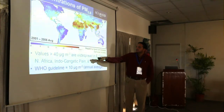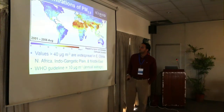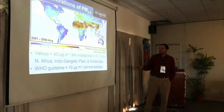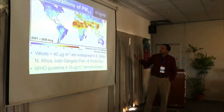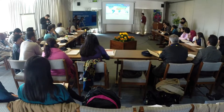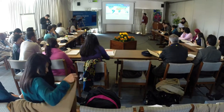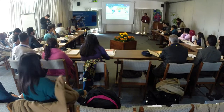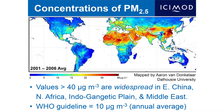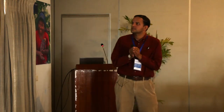Looking at the color shading on the map — focusing on the yellow, orange, and red portions — values above 40 micrograms per cubic meter are widespread across eastern China, the Indo-Gangetic Plain, northern South Asia, parts of Africa, and the Arabian Peninsula. These places are at least four times more polluted than what the WHO considers healthy air. You would be hard-pressed to locate the Beijing or Shanghai metropolitan area, or Delhi — it's just a blanket of red.